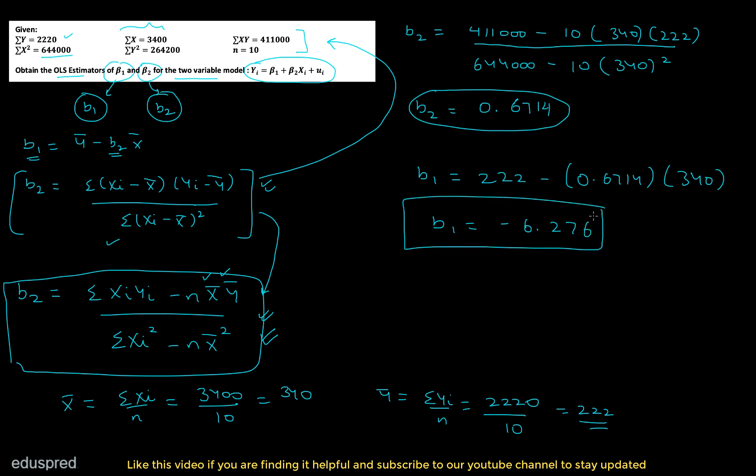And that's it — this question was quite straightforward. The key thing to be careful about is which formula of b2 to use. In this question, the information was given in a manner that using the alternative formula makes sense, which is why you should be familiar with different formulas for b2 — it can save a lot of time in the exam. With this, we are done with the first and third parts of this question. I will discuss the second part in my next video. Thank you.